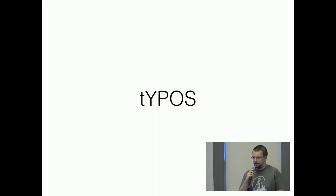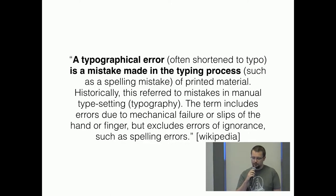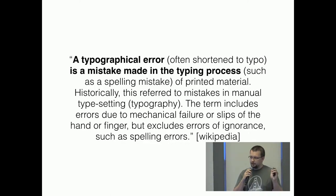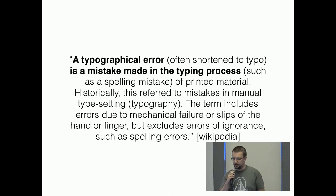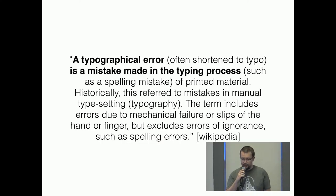The paper provides this definition of a typo: when you are trying to type something, you make a mistake and there is a different character, an additional character, a missing character, or anything else — it's just a wrong string. The top three typos described in the paper are as follows.